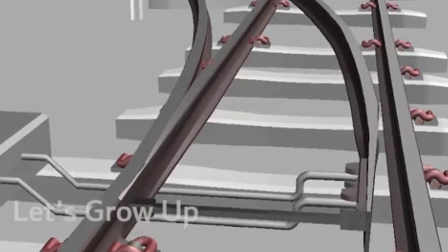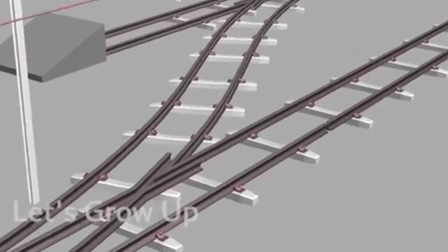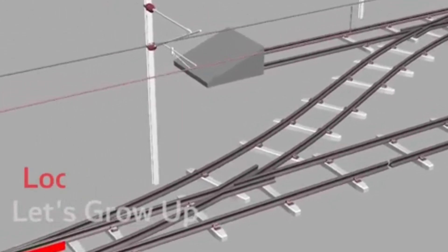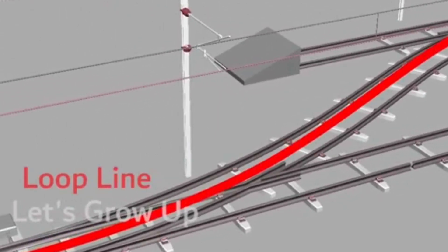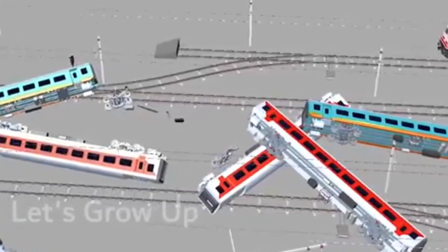In this video, we will guide you through the railway point machine, loop line, and the accident scenario.